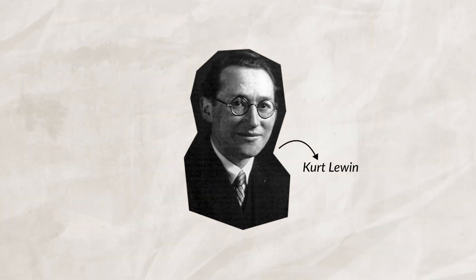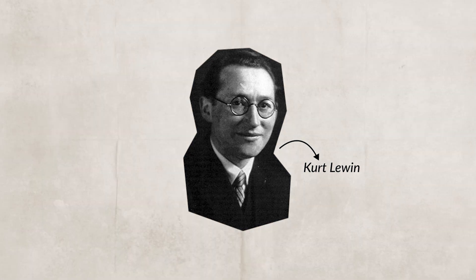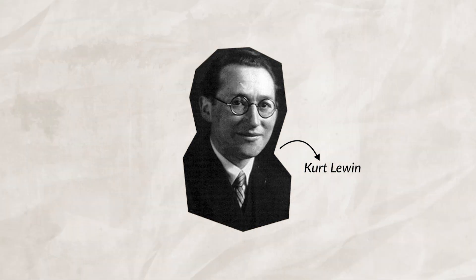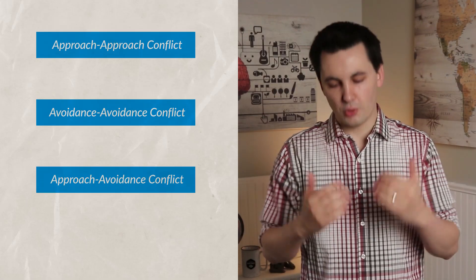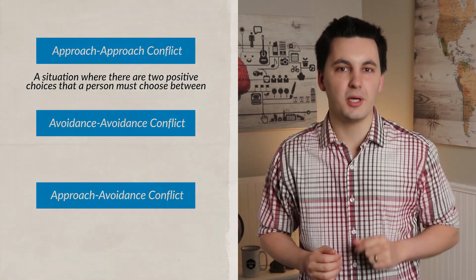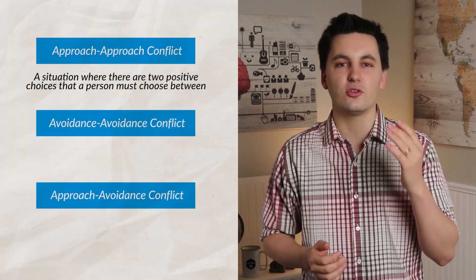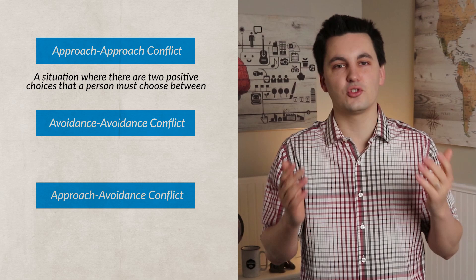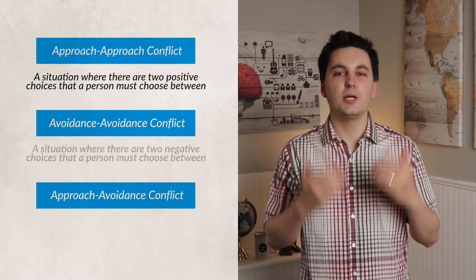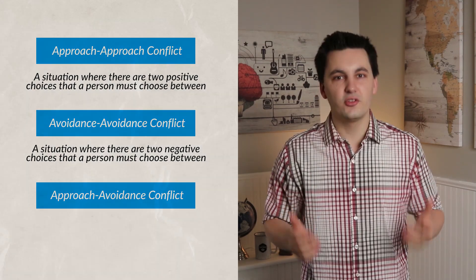Since we're talking about stressors and big life events, we need to talk about Kurt Lewin, who identified three different patterns of conflict that individuals use when confronted with a stressful situation or major decision. The first is approach-approach conflict, which happens when an individual is forced to pick between two positive outcomes — for example, getting into two top colleges and having to choose which school to attend. The second is avoidance-avoidance conflict, which happens when an individual is forced to pick between two negative outcomes, such as whether to stay at a job you don't like or go on unemployment.